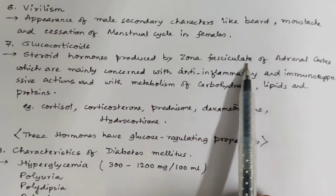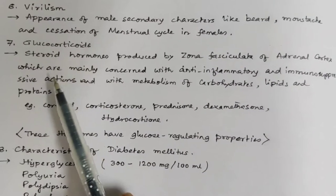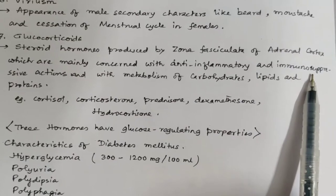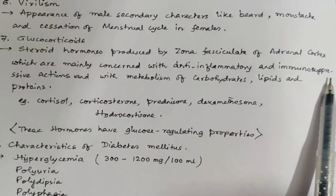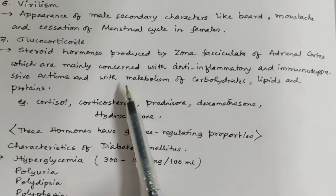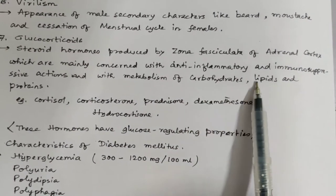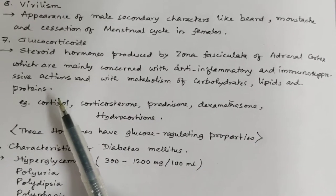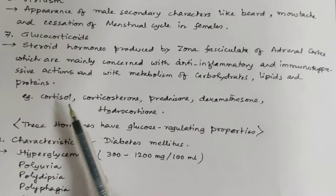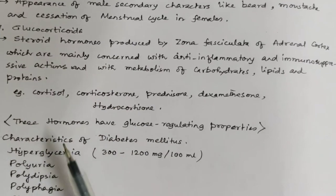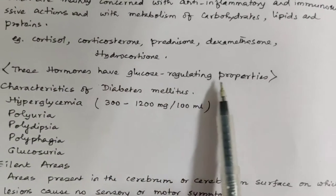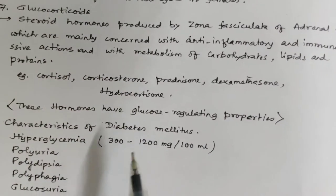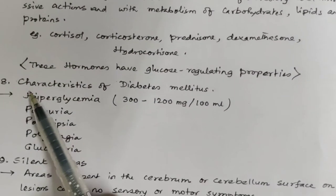Glucocorticoids are mainly concerned with anti-inflammatory and immunosuppressive actions, and with metabolism of carbohydrates, lipids, and proteins. For example: cortisol, corticosterone, etc. These hormones have glucose-regulating properties, which is why they are called glucocorticoids.